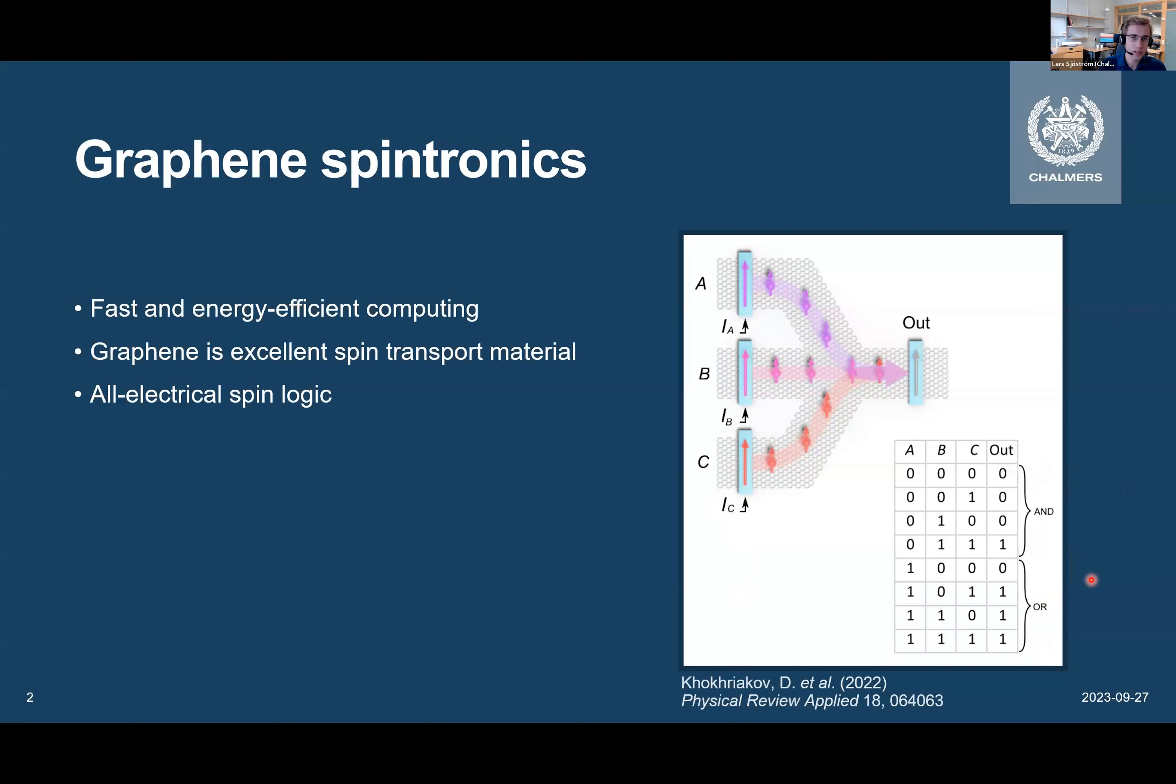So this is very promising, but in addition to this, we also need some memory functionality. And that means to be able to manipulate and read out different magnetic states. And the latter part of this is where I will focus today on reading out different magnetic textures.